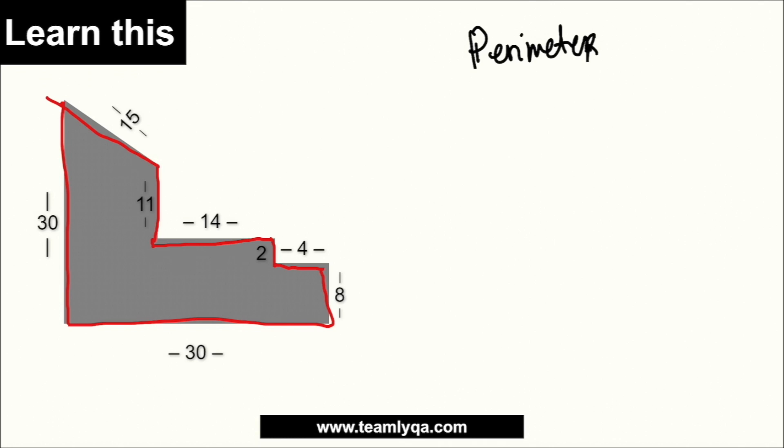So, again, ako, I like chunking. So, pinagsasama-sama ko yung may mga pattern. So, for example, ito 8 saka 2 sa akin, 10 yan. Tapos, itong 11 saka 14, that is 25. So, bawas lang siya sa iniisip ko. So, 30, 30, 60, 70. Tapos, 95. Tapos, yung 95, 100, 10, 114. So, ang perimeter nito is 114. That is for me.